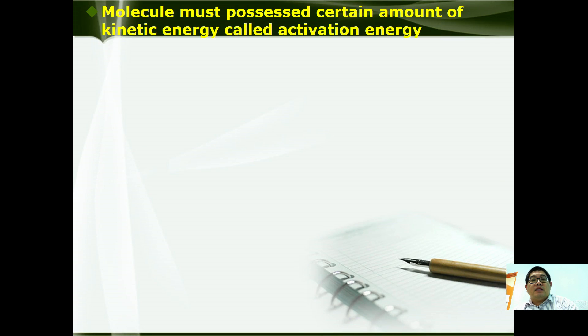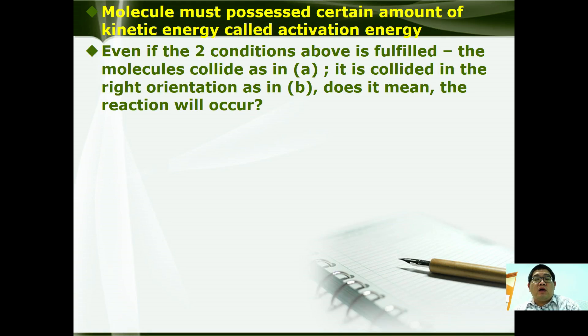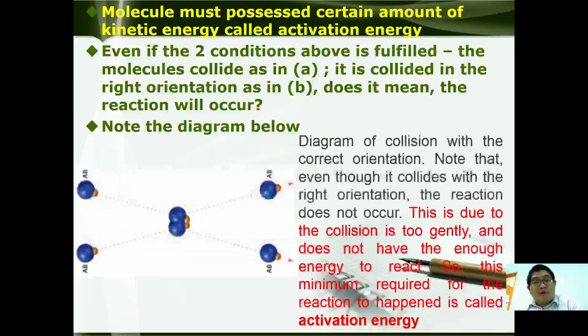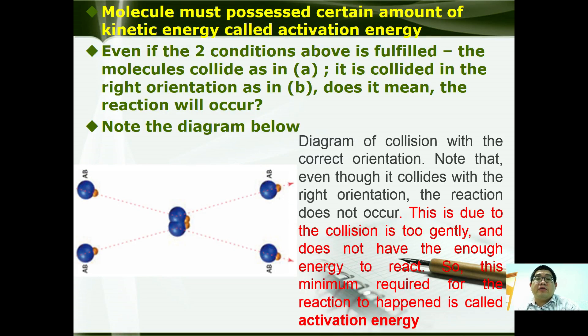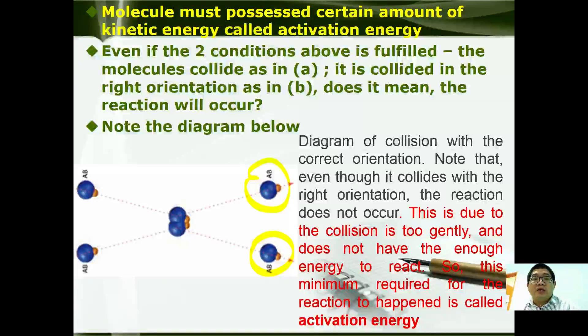The third one is molecules must possess a certain amount of kinetic energy called activation energy. So even if conditions A and B above have been fulfilled, does it mean that the reaction can occur? As you can see here, even though A and B have collided at the right orientation, but at the end, no product is formed. It is still maintained as the original A and B. So why is this happening? This is due to the collision being too gentle and therefore does not produce an effective collision. In order for this effective collision to take place, you must have a minimum amount of energy called activation energy. Only then can a reaction occur.